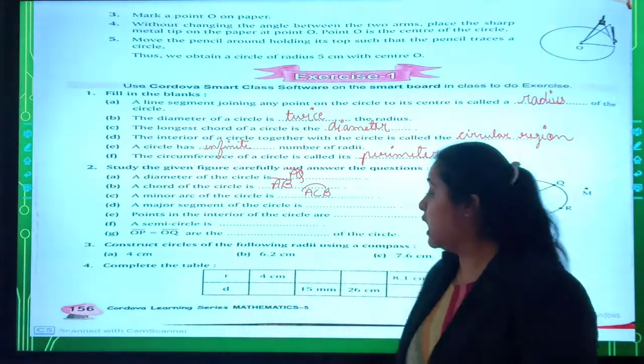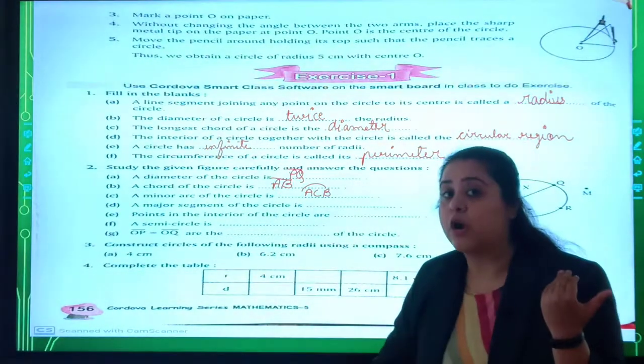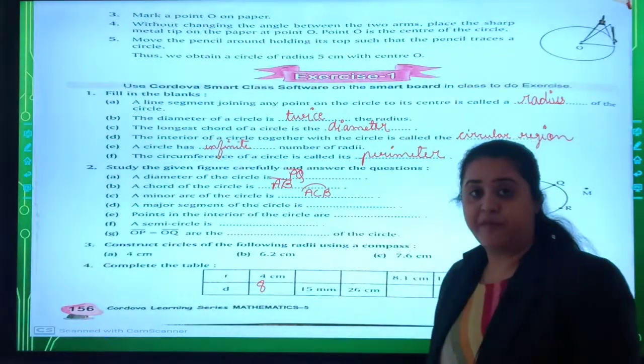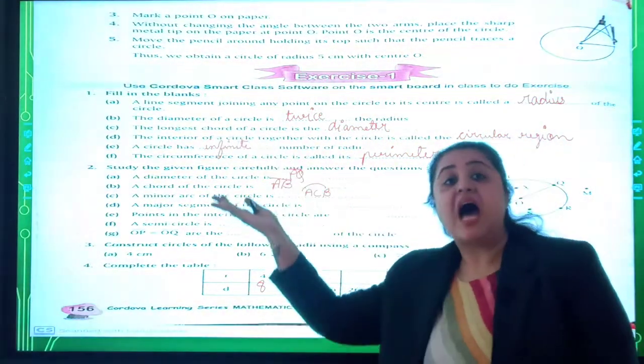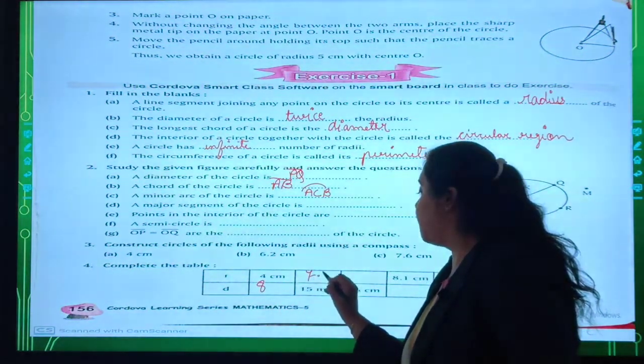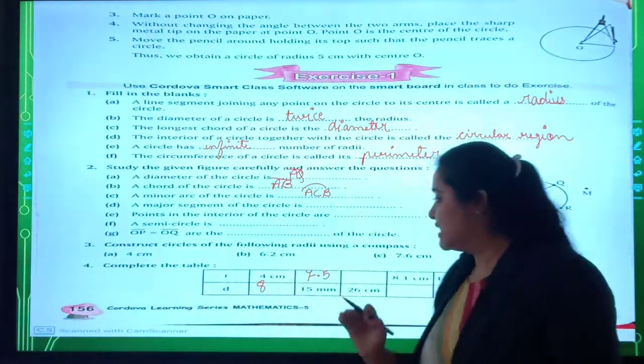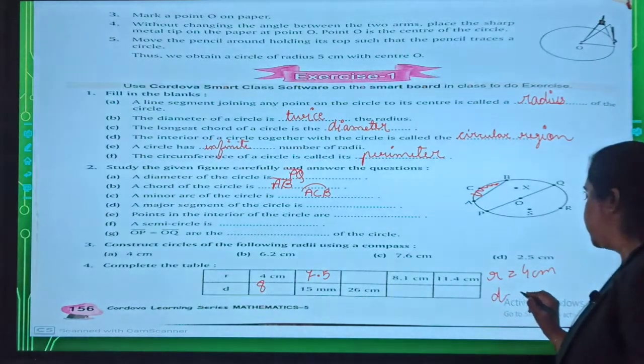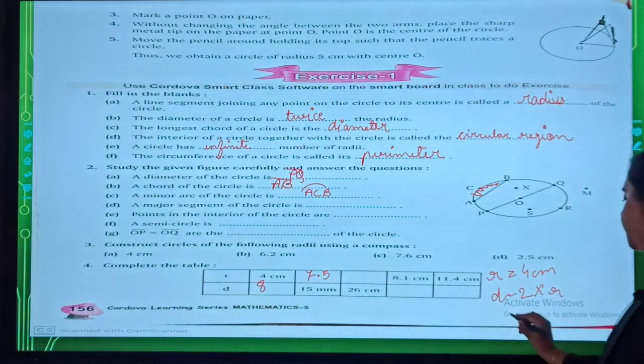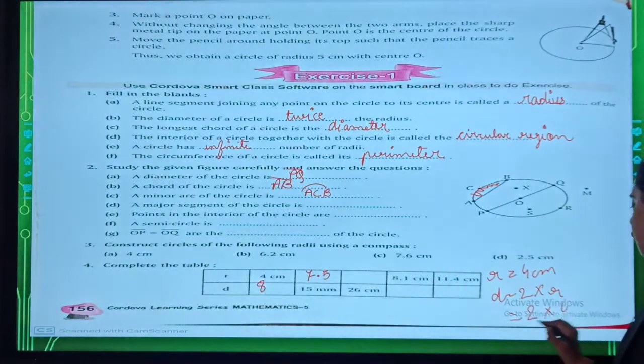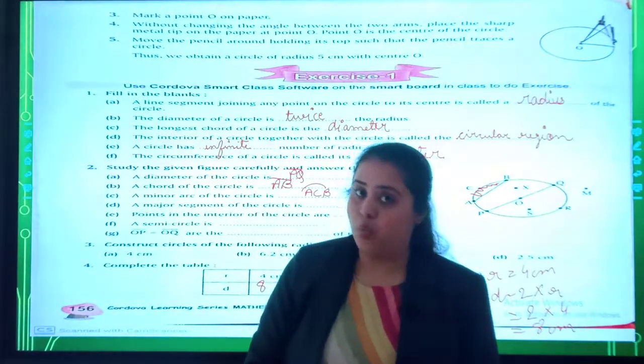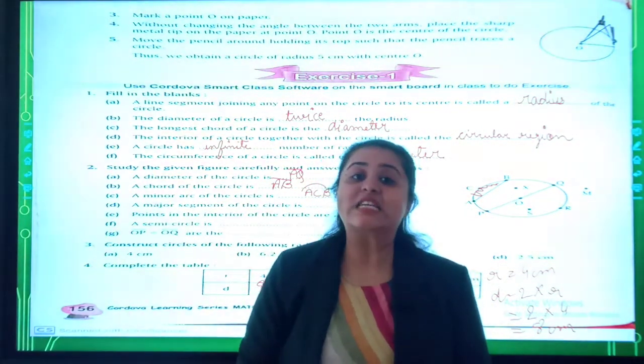Your homework is question number 3 and question number 4. Question number 4, what do you need to do? If radius is 4, then diameter will be double, so 8. If diameter is 15, then radius will be half, 7.5. You have to show proper steps like in this way. Radius equals to 4 cm, diameter equals to 2 into R, 2 into 4 equals to 8 cm. Understood, students? So here we complete our exercise number 1.